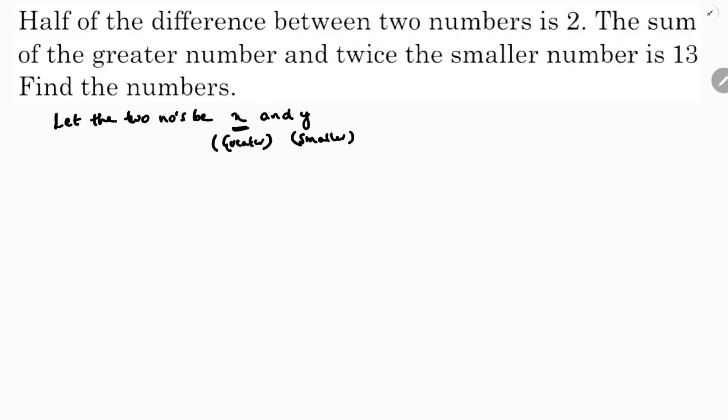Half of the difference between two numbers is 2. So the greater number minus the smaller one, divided by 2, equals 2. Cross multiplying, x minus y equals 4. This is equation 1.